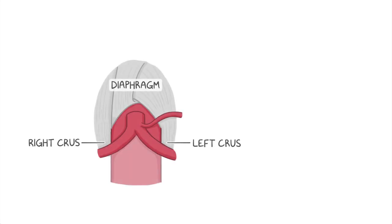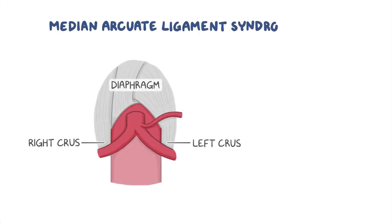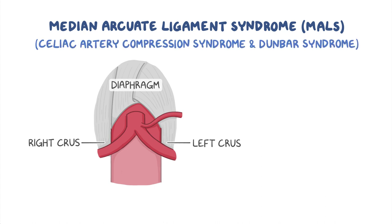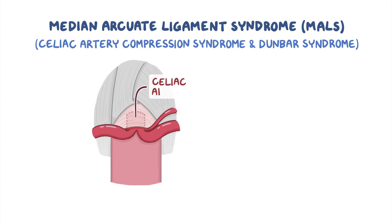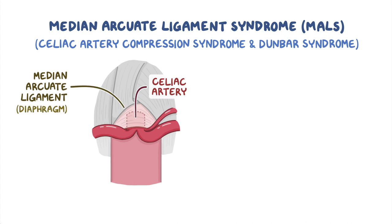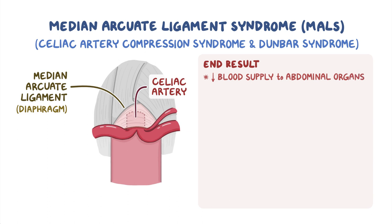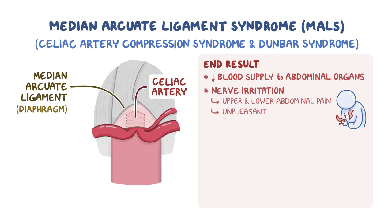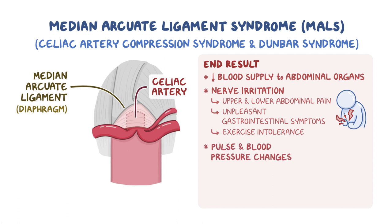Here's a quick recap. Median arcuate ligament syndrome, or MALS, also known as celiac artery compression syndrome and Dunbar syndrome, is thought to be caused by the compression of the celiac artery and its surrounding structures by the median arcuate ligament of the diaphragm. The end result is reduced blood supply to the abdominal organs and/or nerve irritation resulting in upper and lower abdominal pain, unpleasant gastrointestinal symptoms, exercise intolerance, and potentially pulse and blood pressure changes. A bruit heard with a stethoscope over the upper abdomen is indicative of a narrowed vessel.